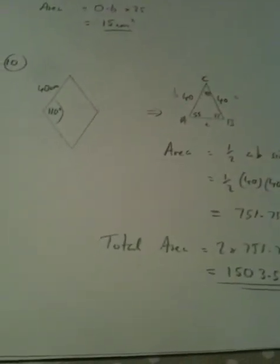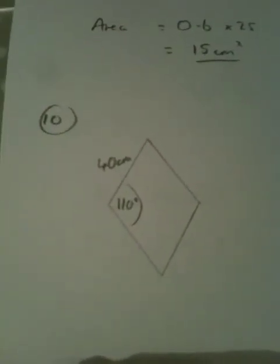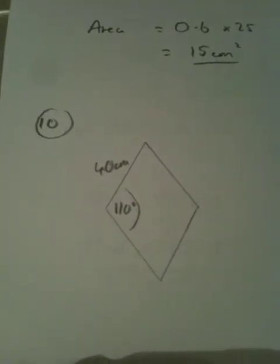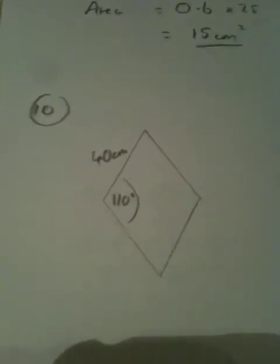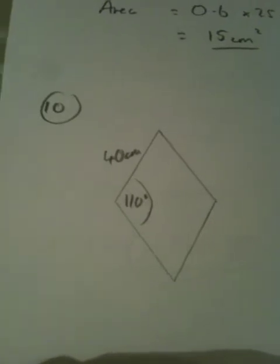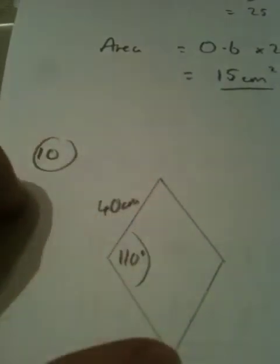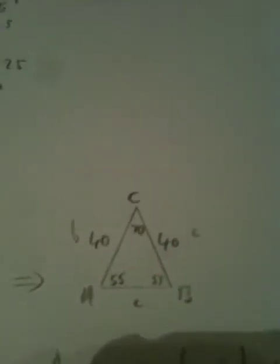Number 10 basically talks about the rhombus. The angle there is 110, each side is 40 because the rhombus has four equal sides. We need to find the area, so I've split across the middle. In hindsight, splitting straight up and down would probably save a little bit of work.